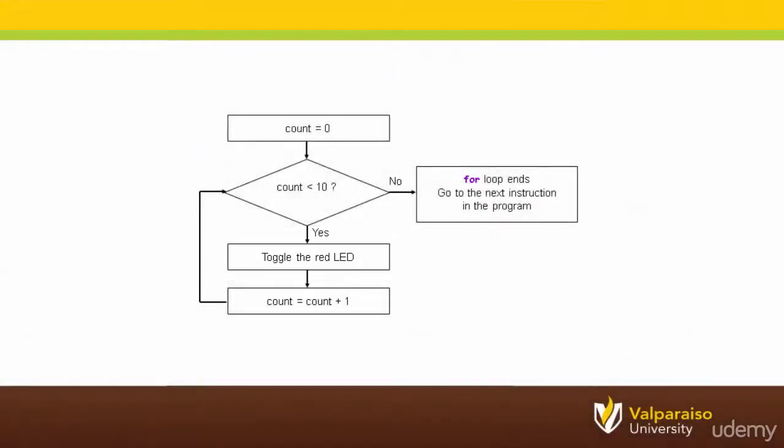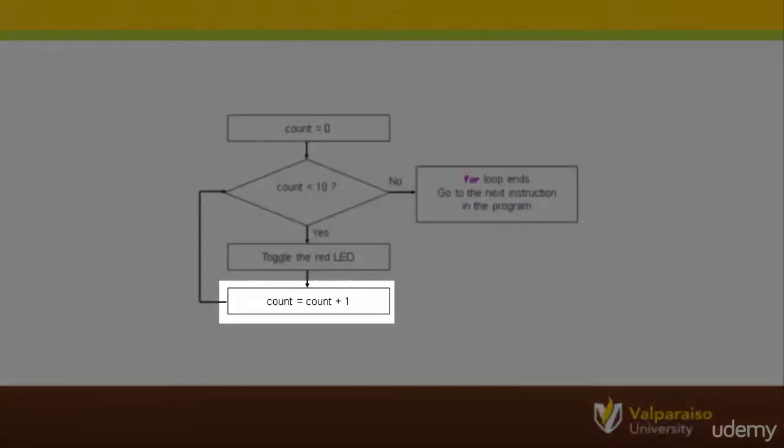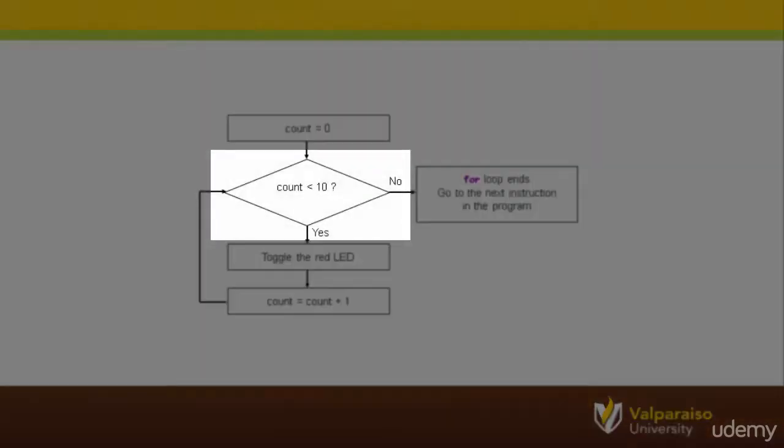Next, the for loop will do something to update the control variable count. In this case, the value stored in the count variable is increased by 1. Finally, the for loop returns to test the control variable against the specified condition.